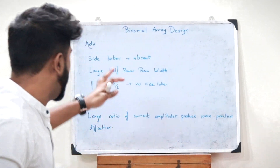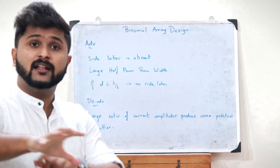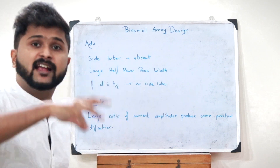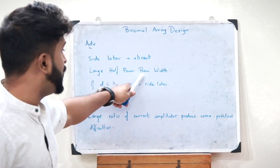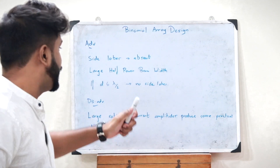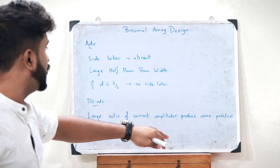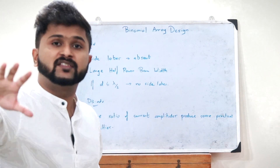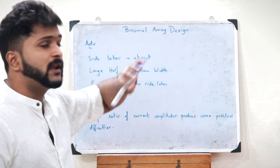The advantages of a binomial array are: first, side lobes are absent; second, it has a large half-power beam width (HPBW); and third, if the distance between antenna elements is less than or equal to λ/2, there are no side lobes present at all.